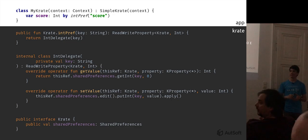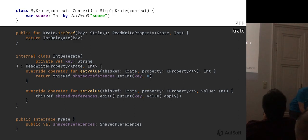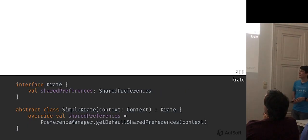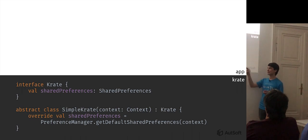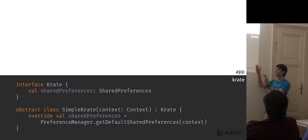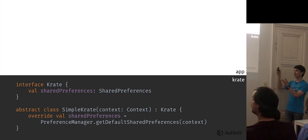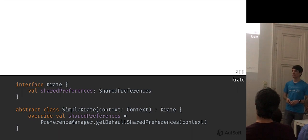Another question: if you have multiple Crates and both define a property named `score`, will they overwrite each other? Yes, by default they will. What I showed earlier was just opening the default shared preferences instance using the passed-in context — a simplified version of our library's code. The actual SimpleCrate class has an extra parameter which is the name of the shared preferences to open. This is a nullable parameter, so if you don't provide a name we'll use the default shared preferences. But if you do, you can use a different shared preferences instance for each of your Crates. You may also override the interface directly should you need to, though SimpleCrate solves most cases.